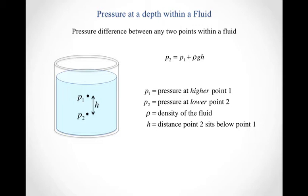So again, it tells you that P2, which is the pressure at the lower point in the fluid, has got to be equal to P1, the pressure at the higher point in the fluid, plus rho g h. So the density of the fluid times 9.8 meters per second squared, gravitational acceleration, times h, which is how far vertically point 2 sits below point 1.